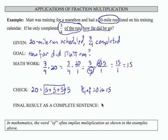So our final result as a complete sentence then to respond back to our goal is that Matt ran 15 of the scheduled 20 miles.